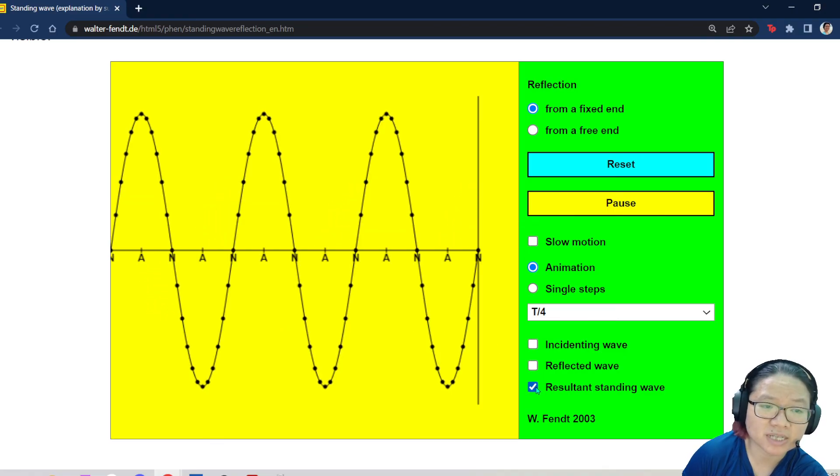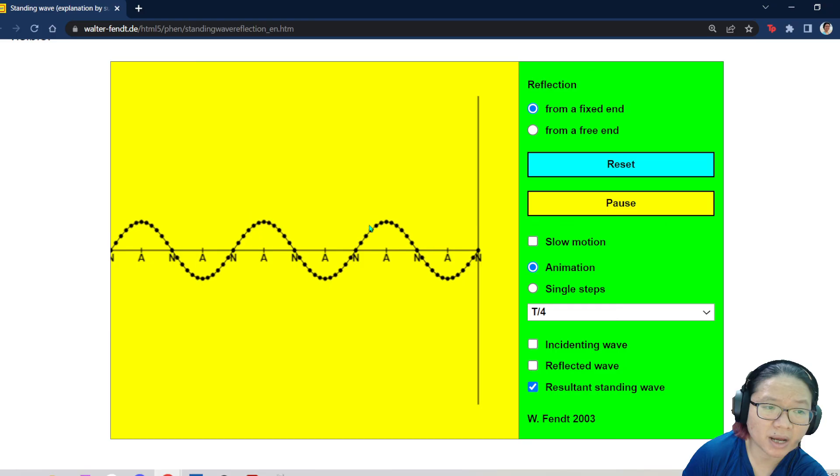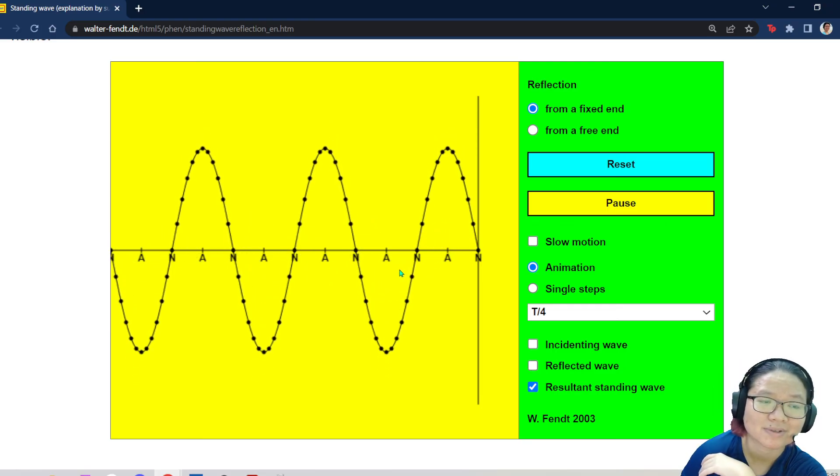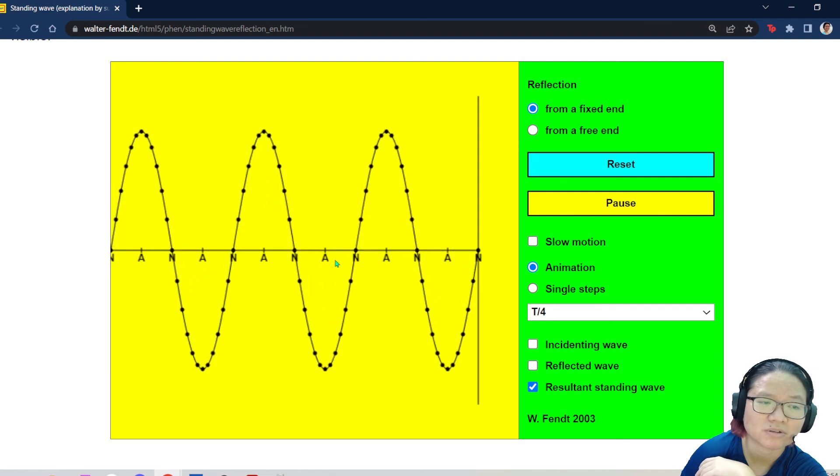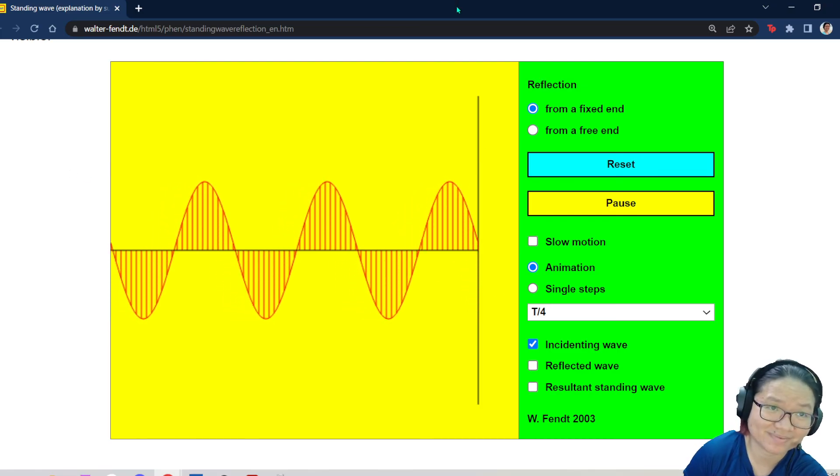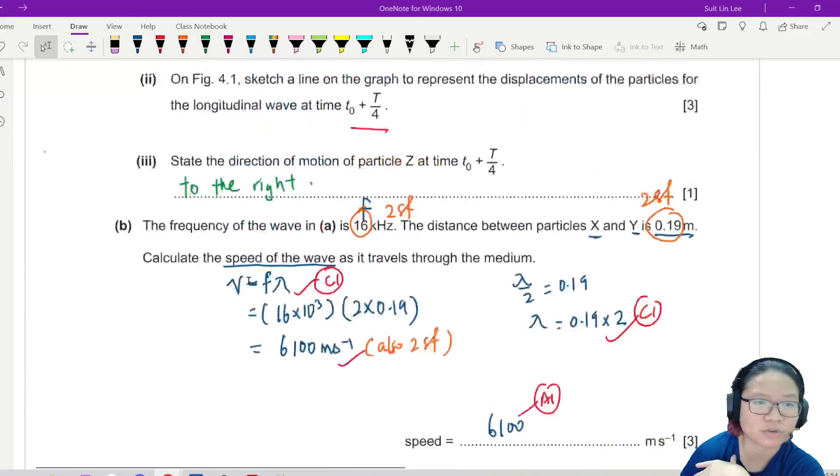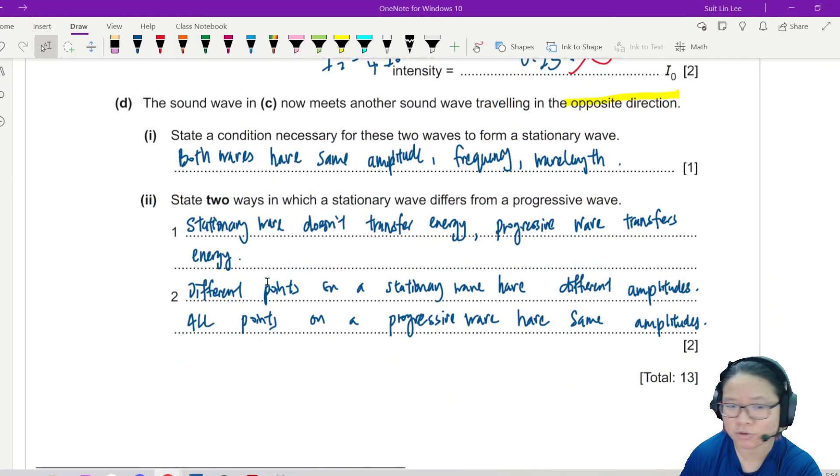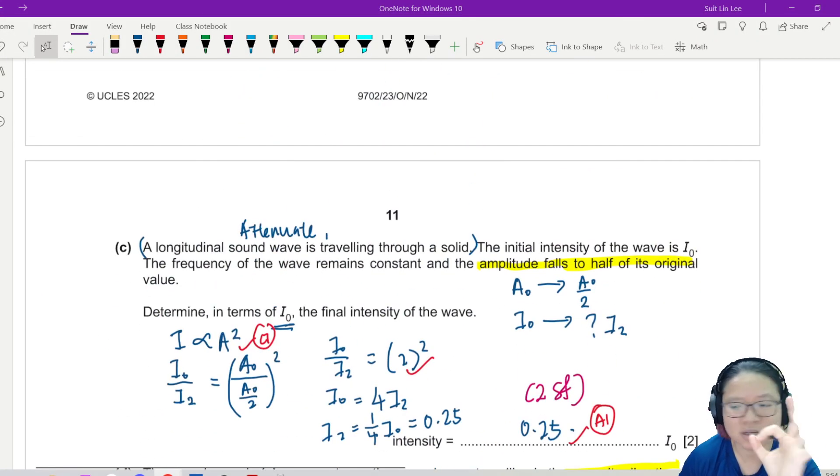But if I look at standing wave, different particles, different spots will have different amplitudes. And the energy is like trapped here, nowhere to go. Whereas if you look at this, the energy is traveling. That's it for this question. I like this. This one is a very thorough question. They ask many parts of wave and superposition in a nice 13-minute situation.